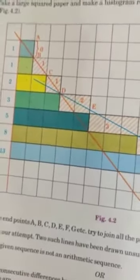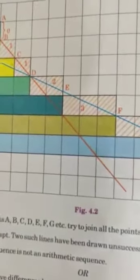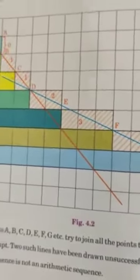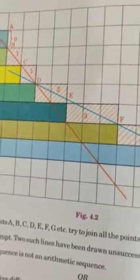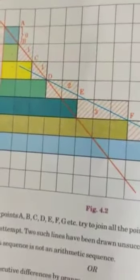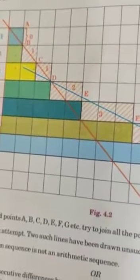I hope you will understand this. If you have any difficulty, then you can ask me. Here we have taken two different sequences so that one forms an arithmetic progression and the other does not form an arithmetic progression.